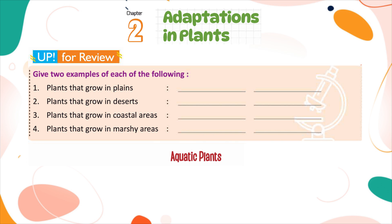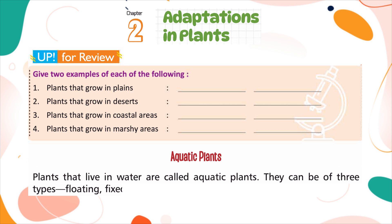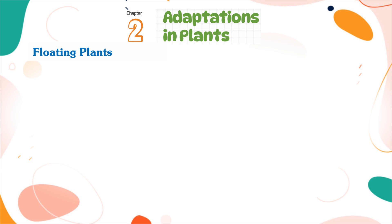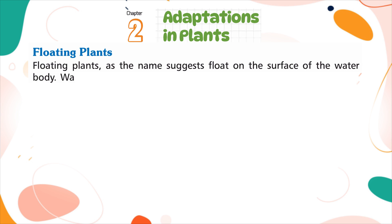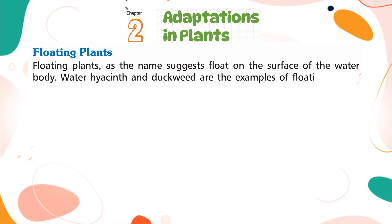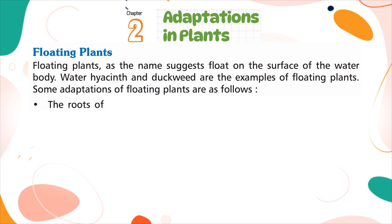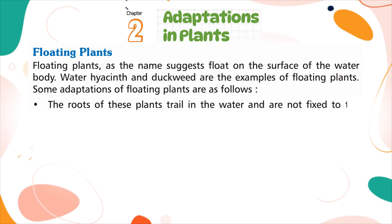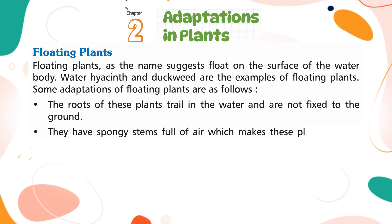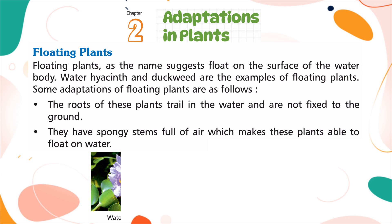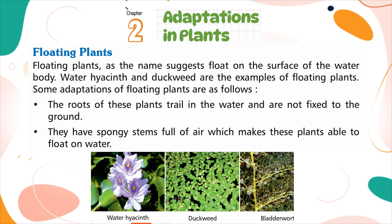Aquatic Plants. Plants that live in water are called aquatic plants. They can be of three types: floating, fixed, and submerged or underwater. Floating plants, as the name suggests, float on the surface of the water body. Water hyacinth and duckweed are examples of floating plants. The roots of these plants trail in the water and are not fixed to the ground. They have spongy stems full of air, which makes these plants able to float on water. Examples include water hyacinth, duckweed, and bladderwort.